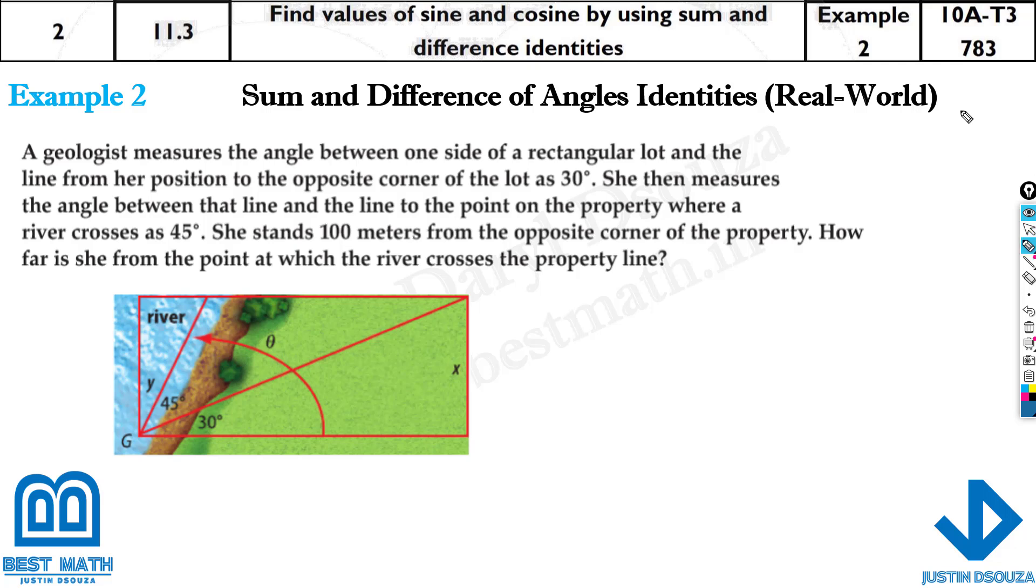Here we have a real-world problem. A geologist measures the angle between one side of the rectangular lot and the line from a position. You can see over here the geologist is there. This is the person. And this is the rectangular lot given. So this is the borders.